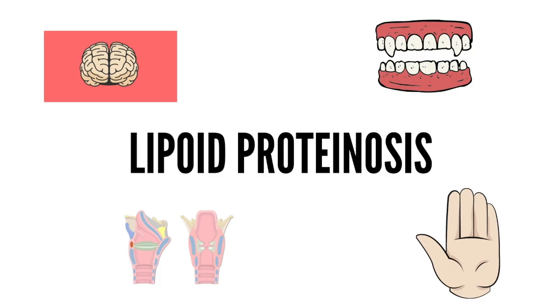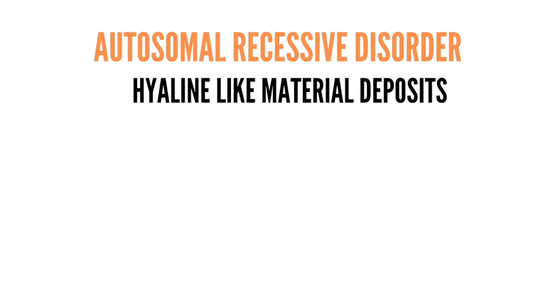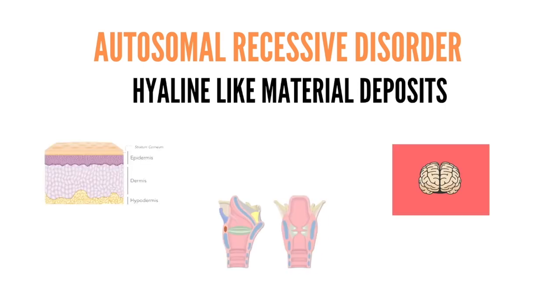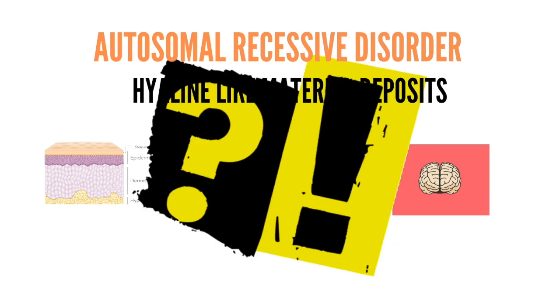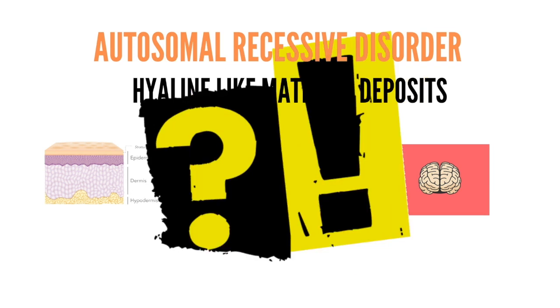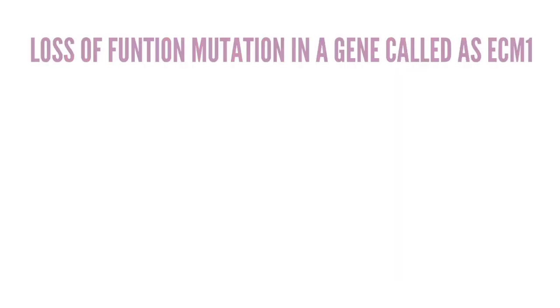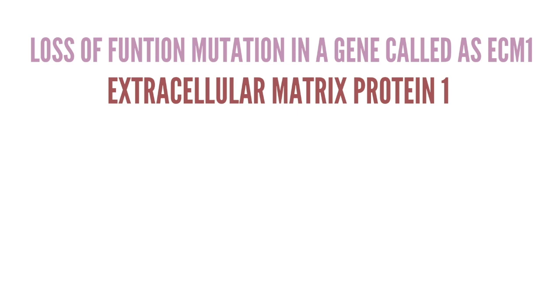Lipoid proteinosis is an autosomal recessive disorder in which hyaline-like material deposits in the skin, oral mucosa, larynx, and the brain. The exact nature of this material is unknown. This deposition occurs because of a loss-of-function mutation in a gene called the ECM1 gene, which encodes extracellular matrix protein 1 — a secretory glycoprotein which has many roles, giving us insight into the disease pathogenesis.